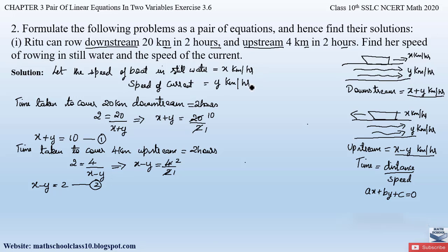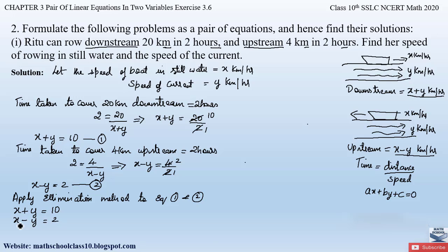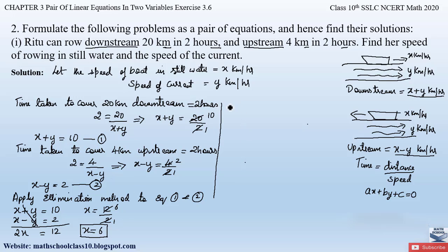We now have two equations: equation 1 is x + y = 10, and equation 2 is x − y = 2. We will apply the elimination method. The coefficient of y is 1 in both equations with opposite signs, so we can directly eliminate y. Adding both equations: 2x = 12, therefore x = 6.